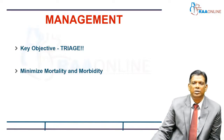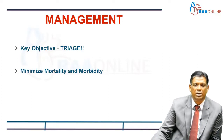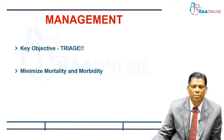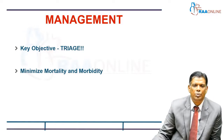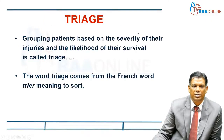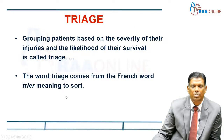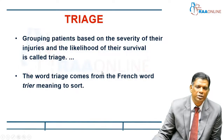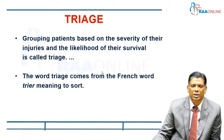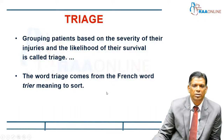The key objective in any mass casualty management is to establish a good triage system which will minimize mortality and morbidity. Triage comes from the French 'trier,' meaning to sort out, and basically what it means is to group patients based on the severity of their injuries and the likelihood of their survival.